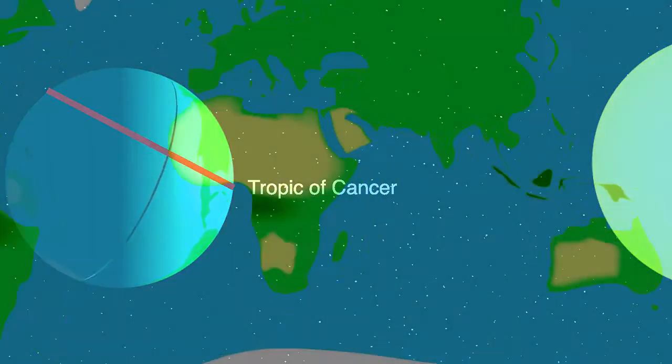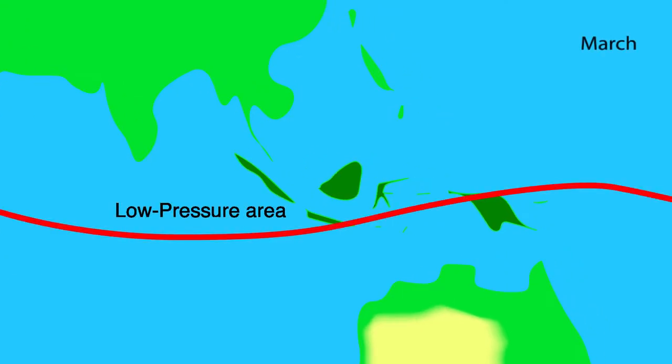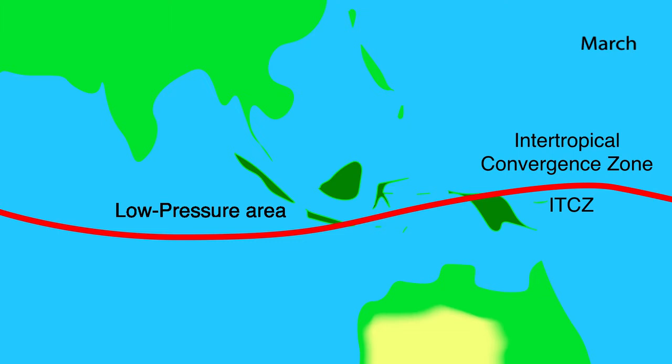Although there is huge variety per season, on average per year the equator receives the most energy. This energy creates a low pressure area. The low pressure area around the equator is called the Intertropical Convergence Zone, or the ITCZ.